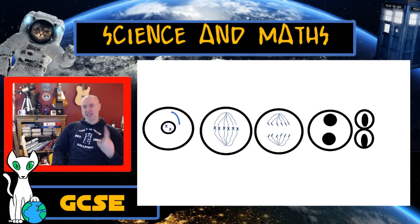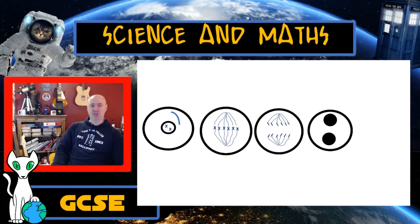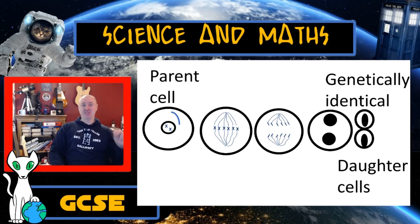But we used the term genetically identical before, so let's complete our definition for mitosis. Mitosis starts off with a single parent cell. This parent cell produces two new cells that we're going to call daughter cells, but these daughter cells are genetically identical. So my definition for mitosis is the production of two genetically identical daughter cells from one parent cell.